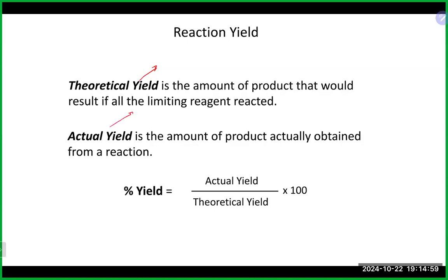In reality, reactions aren't perfect — sometimes side things happen. We also have the actual yield, which is pretty much what it sounds like: it is the actual amount of product you actually produced when you did the reaction. In textbook problems, they will typically give you that number somewhere in the problem. In the laboratory, you would measure it yourself. If you take both of those together, we get the percent yield, which is the actual yield divided by the theoretical yield, times 100 percent. We are looking for a larger number, close to 100.